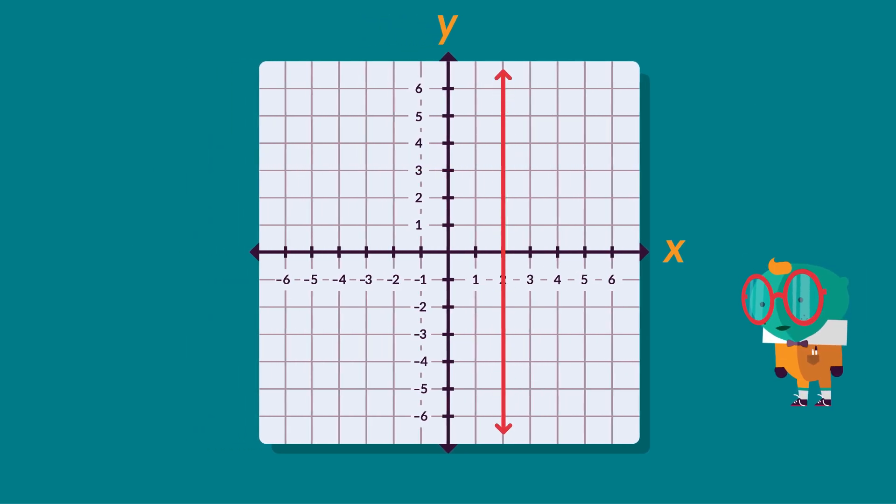If you climb a vertical cliff, you are climbing upwards only, not moving along. For a vertical line, all the points on the line have the same x-coordinate.